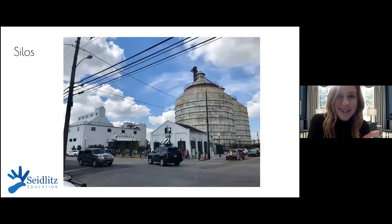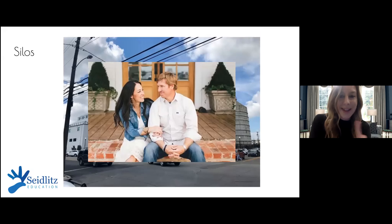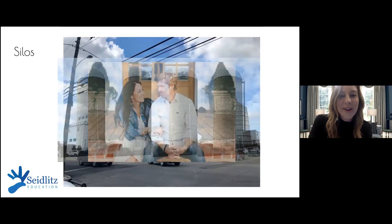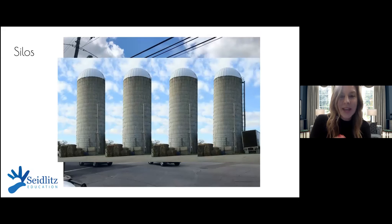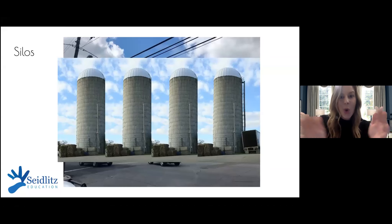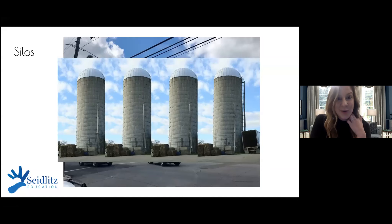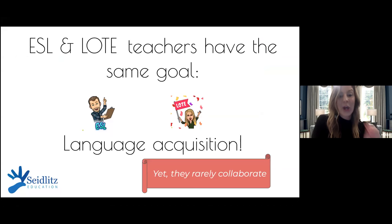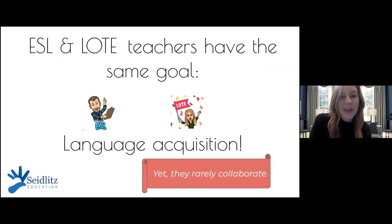Silos in education — not the Magnolia Market kind that Chip and Joanna Gaines fans might think of — means compartmentalized learning, where entities are just not interacting. That's what I found in my work over the last ten years: our English language teachers and LOTE teachers are not collaborating as much as they could. At the end of the day, our goal is the same — the ultimate goal is language acquisition. So what do we do to further these opportunities?